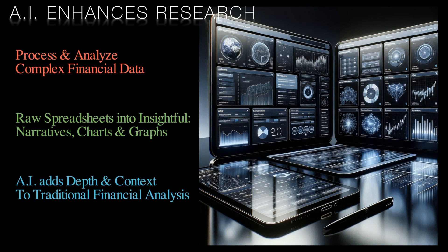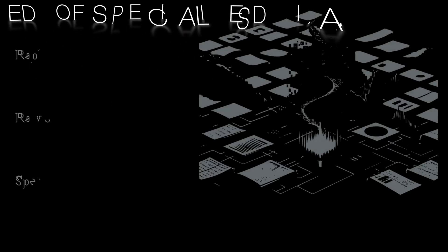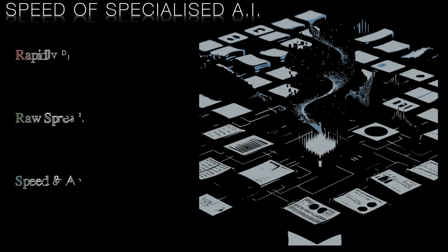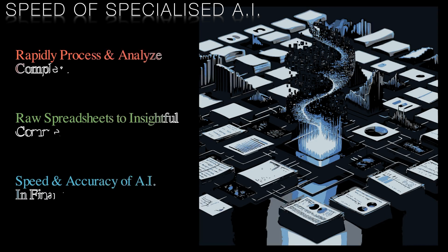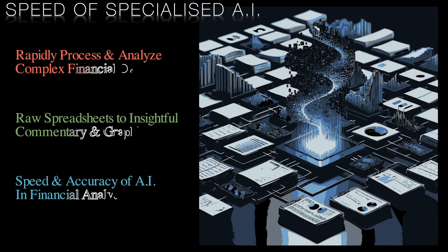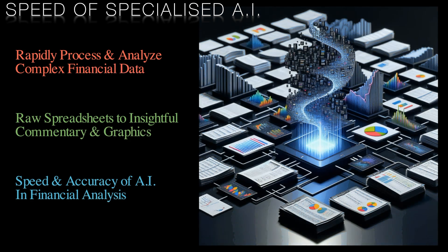We'll look at how specialised AI that has been fine-tuned on equity information can extract patterns from raw data from multiple data sources and pull out meaningful insights. We'll also see how AI can analyse spreadsheets for missing information and outliers, and even help us clean up messy data to further improve the quality of our data pipelines.